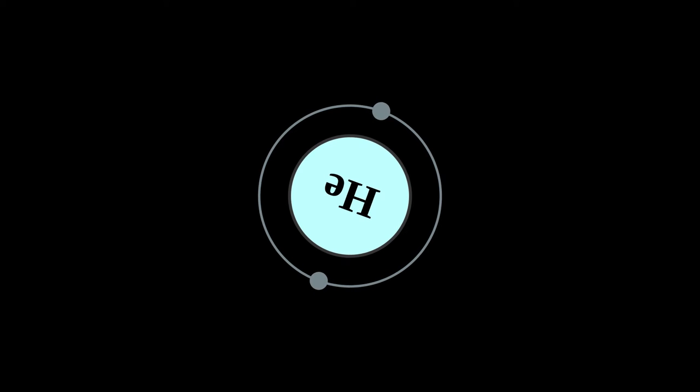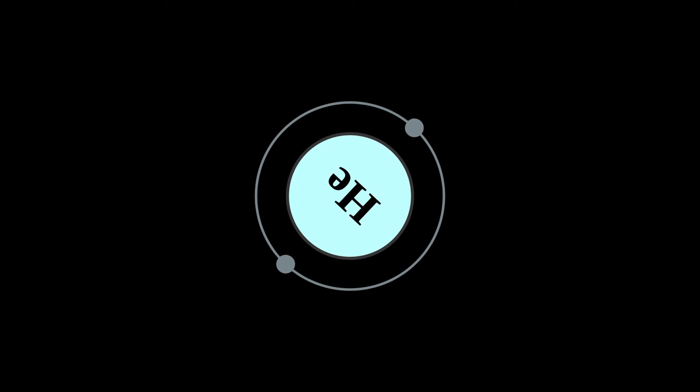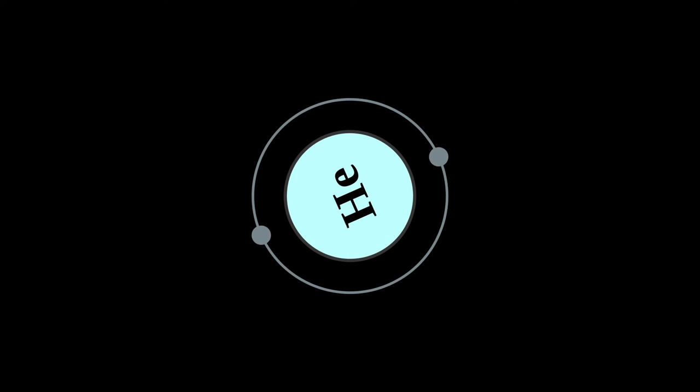Helium is named for the Greek god of the Sun, Helios. It was first detected as an unknown yellow spectral line signature in sunlight during a solar eclipse in 1868 by French astronomer Jules Janssen. Janssen is jointly credited with detecting the element along with Norman Lockyer.